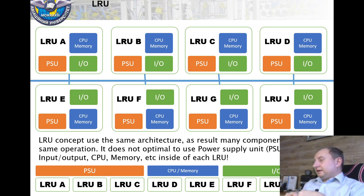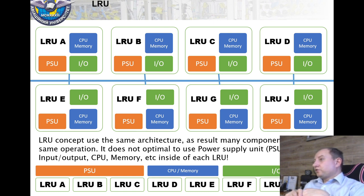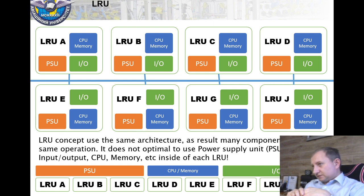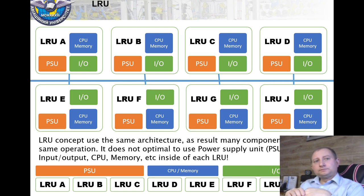From an engineering point of view, we have two ILS computers used only for about 1% of the whole flight — during landing. It would be much better to share the computation part of this equipment for other purposes, such as computing flight management system tasks or solving navigation problems. That's why integration has been required for different reasons.